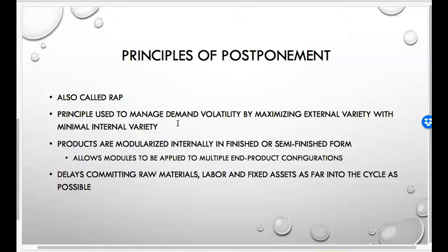In principles of postponement, what you do is modularize and use common components as far up the supply chain as possible before creating multiple different designs. Boeing used to do this — offering seven or eight seat types and colors, but they found it very expensive. So they shifted to offering a mostly finished plane and then providing modular options to customize it, pushing variation as far up the supply chain to reduce its effect on the system as a whole.